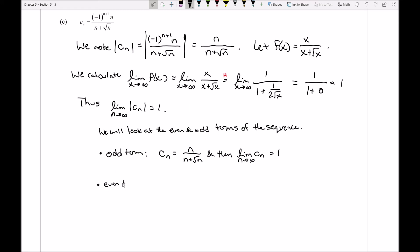However, when I look at even terms, my c sub n is going to produce a negative. Notice again, because I'm going to have an even plus 1 is an odd, negative 1 to an odd power is going to produce a negative. And then in this case, the limit as n approaches infinity of my c sub n would turn into negative 1.